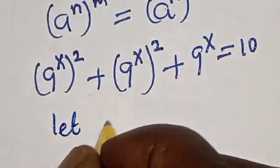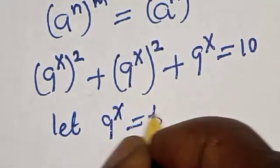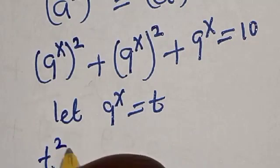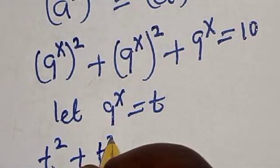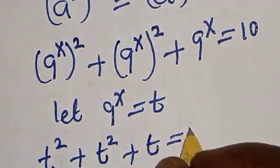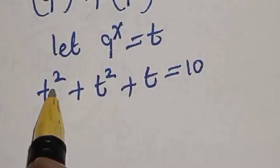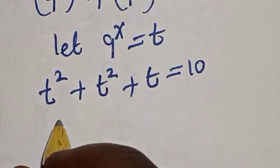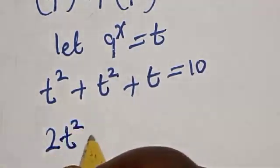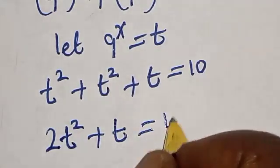Let 9 raised to power s equal t. Then t squared plus t is equal to 10.